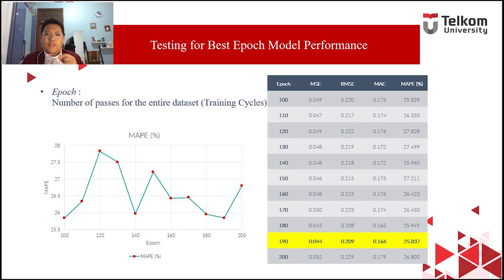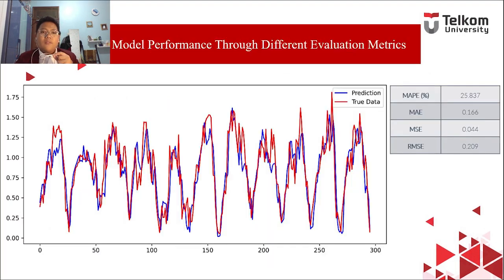After determining the best configuration, we trained the configuration of three neurons in hidden layer 1 and seven neurons in hidden layer 2 even further, resulting in training for 200 epochs to get our best result at 190 epochs. With an MSE of 0.044, an RMSE of 0.209, MAE of 0.166, and MAPE of 25.8037% — this was our final result, which we were satisfied with. The representation of the predicted data compared to the true data of our validation dataset looks very good, with only a few minor deviations.